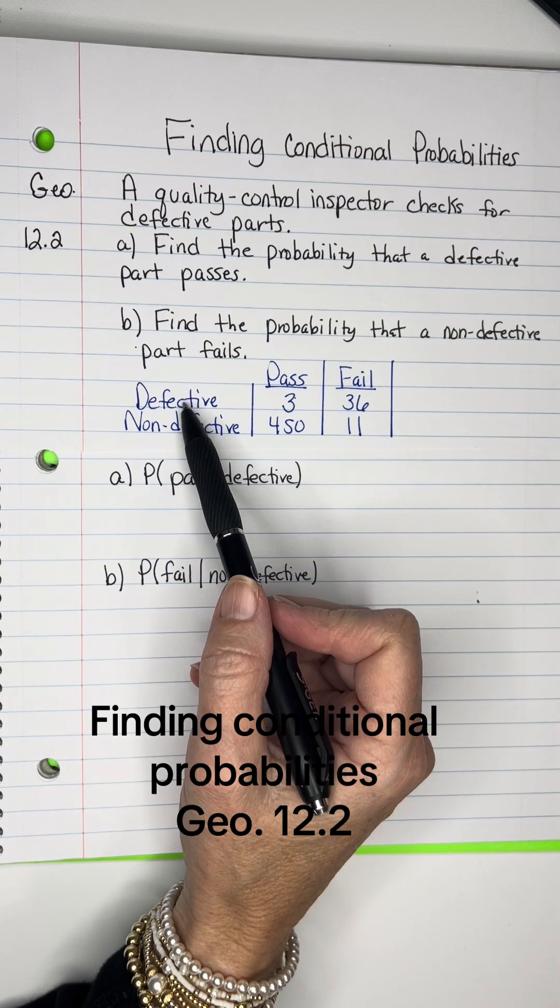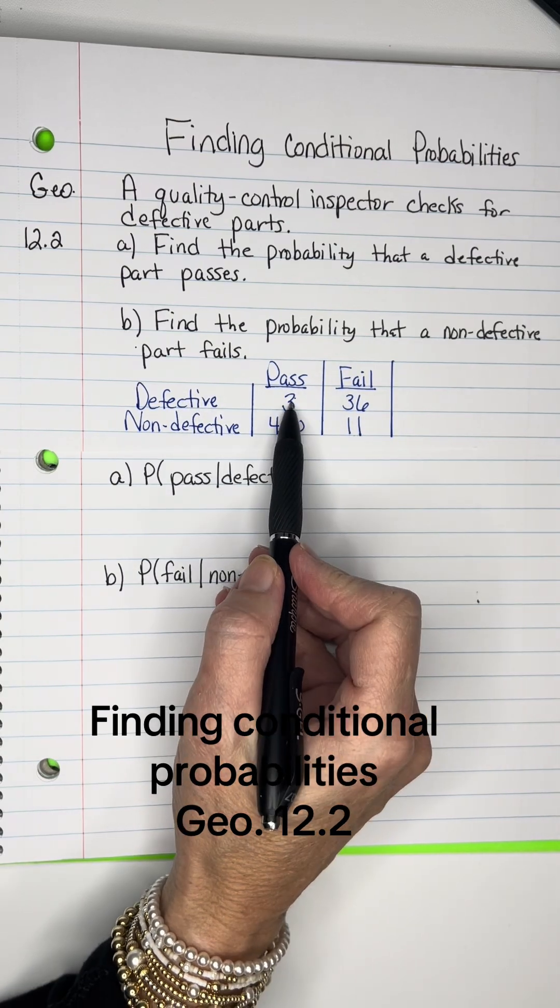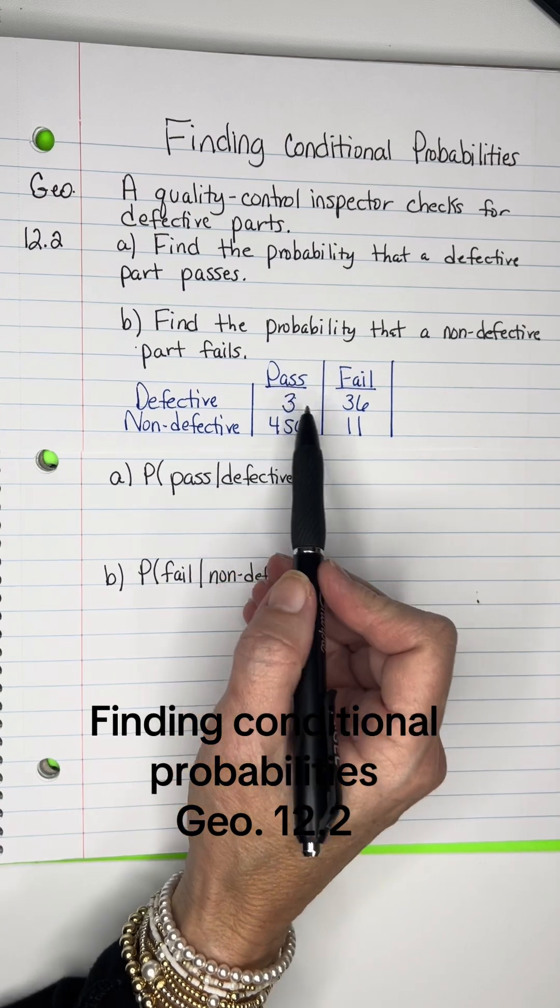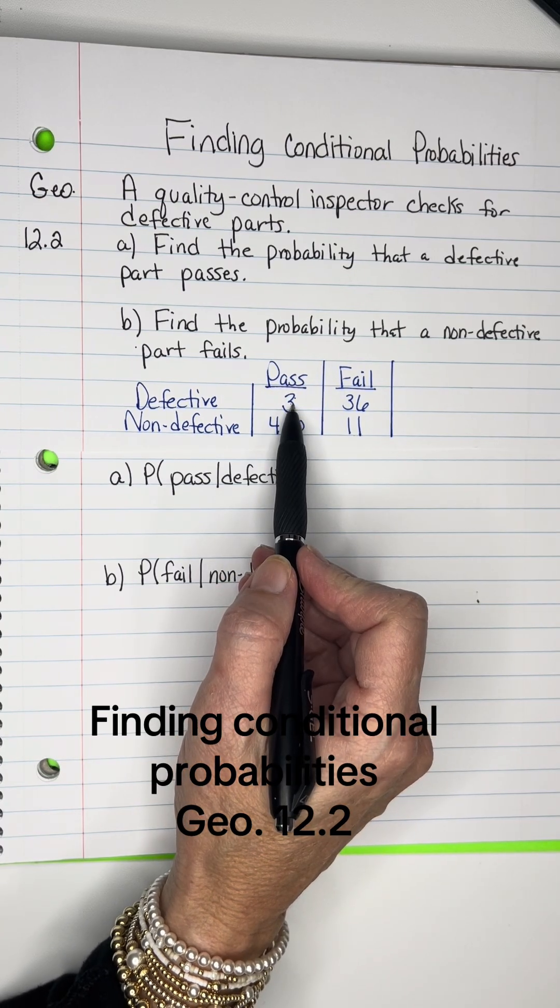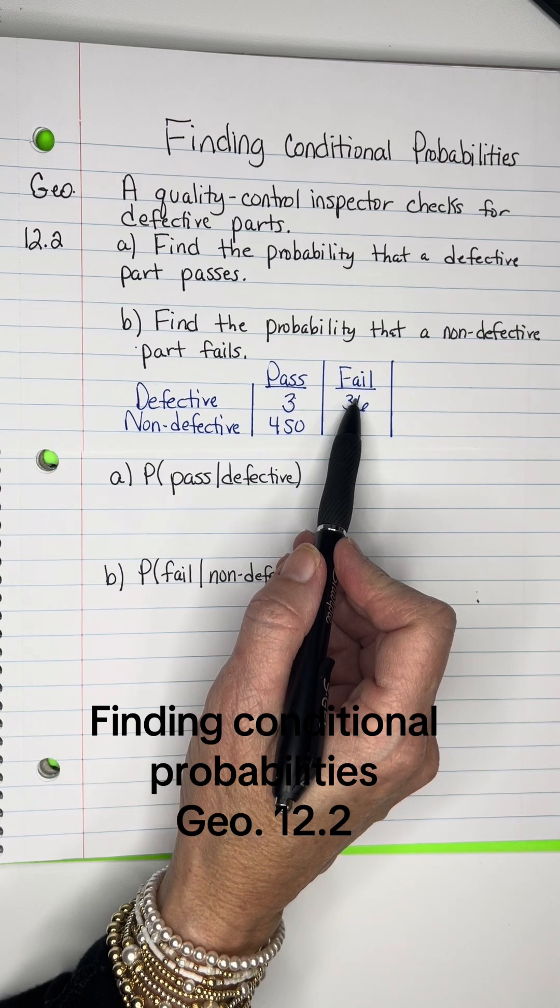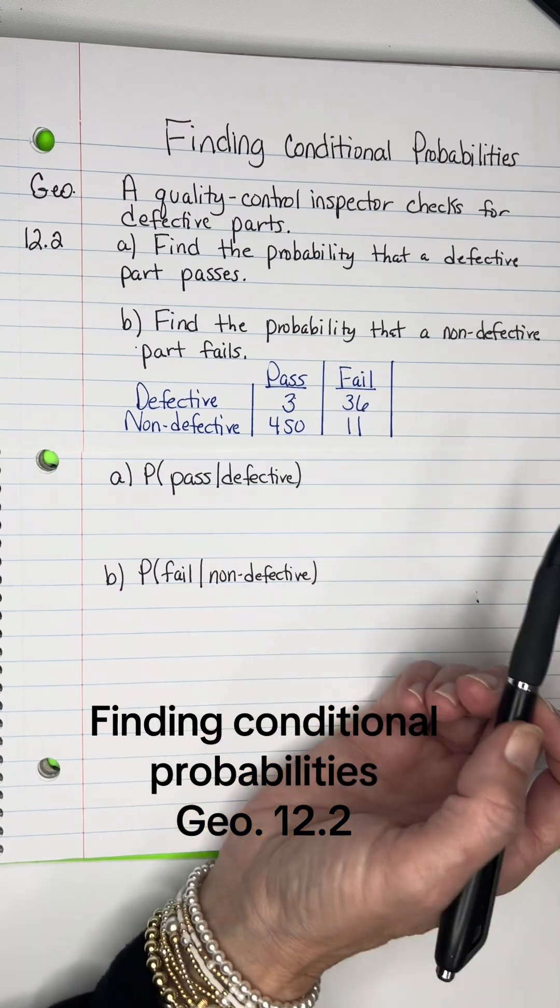He had defective ones and three passed that were defective - when you buy it, it's not going to be any good. But 36 of the defective ones did fail. He threw those out.